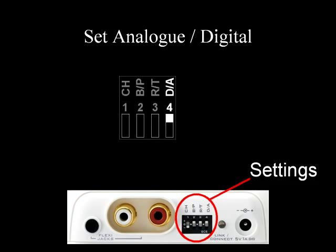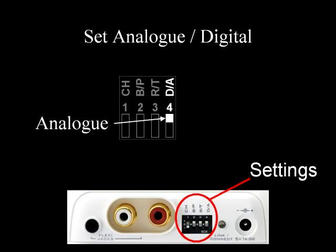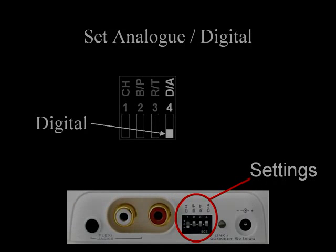Use switch 4 to set your transmitting unit to either analogue input or digital input and plug in your input source, and all of your receiving units to analogue output or digital output and plug in your output cables.